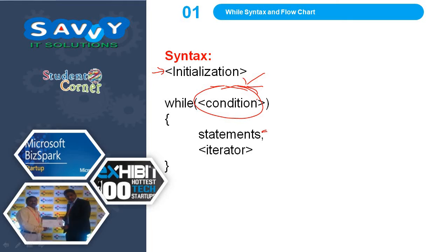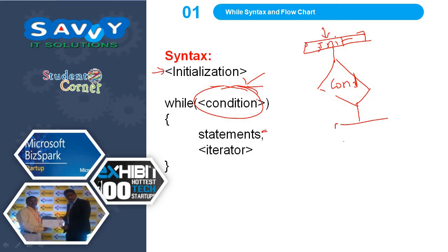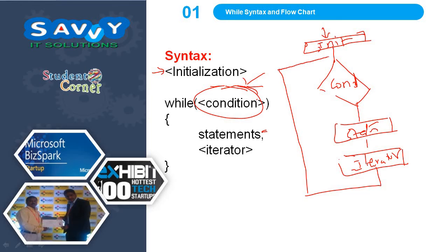The flowchart for the while loop is: initialization, followed by condition, then statements, followed by iterator. If the condition is yes, it loops back; if no, it comes out of the loop. That is exactly what is represented in the while loop flowchart.